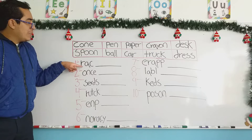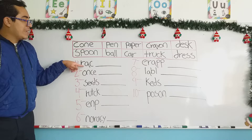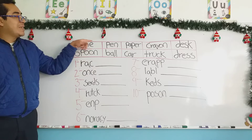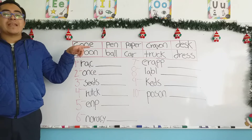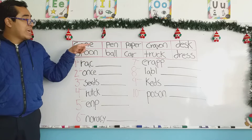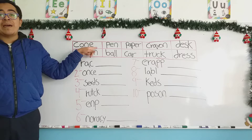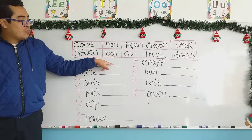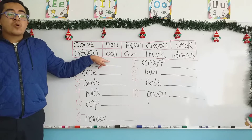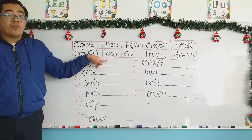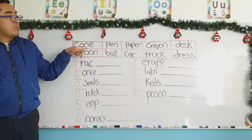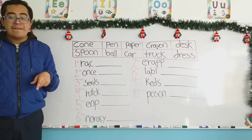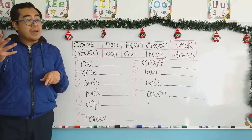Once we identify the word, we write it in its correct ordered form, and then we cross it out. Okay? Let's start.